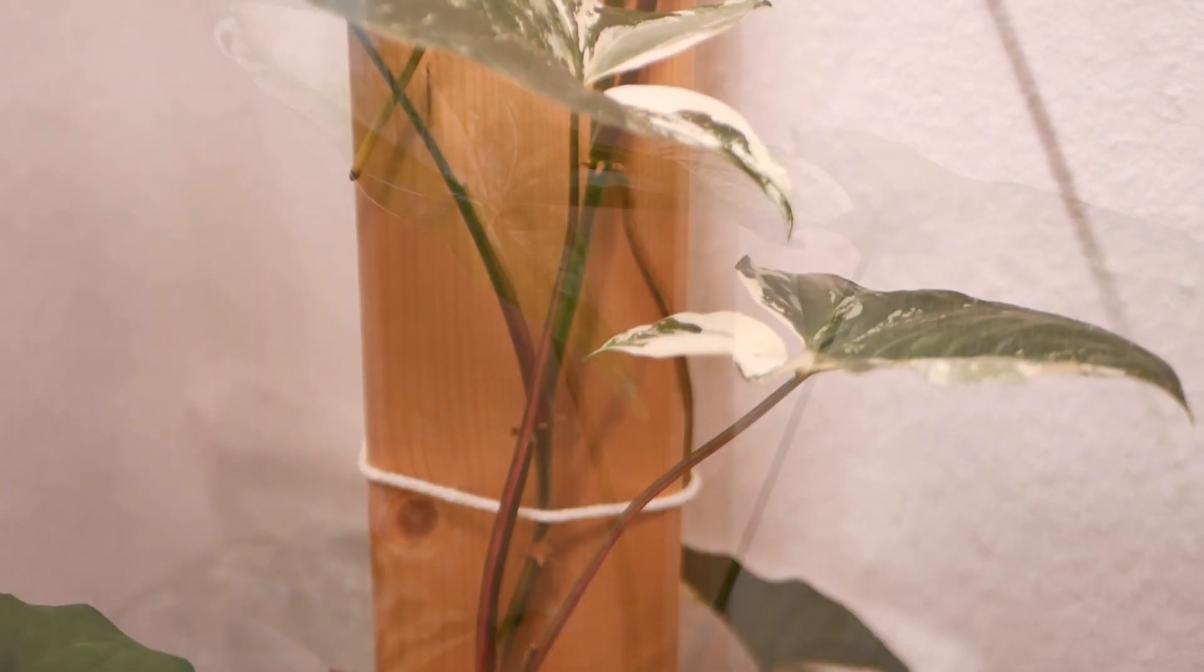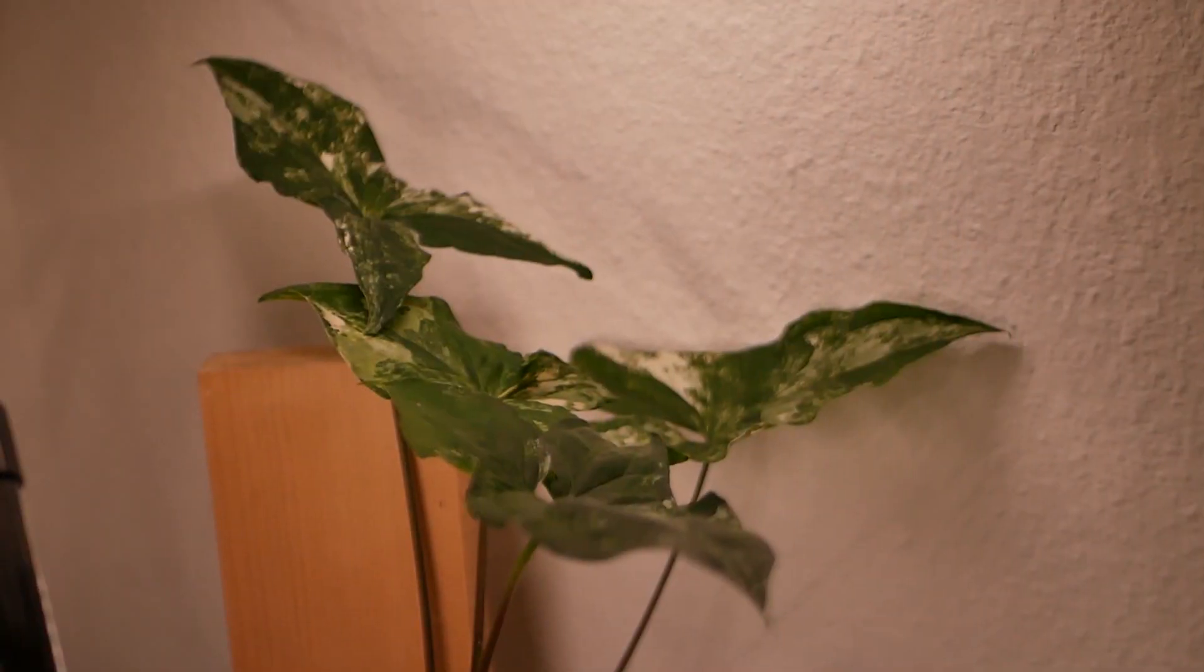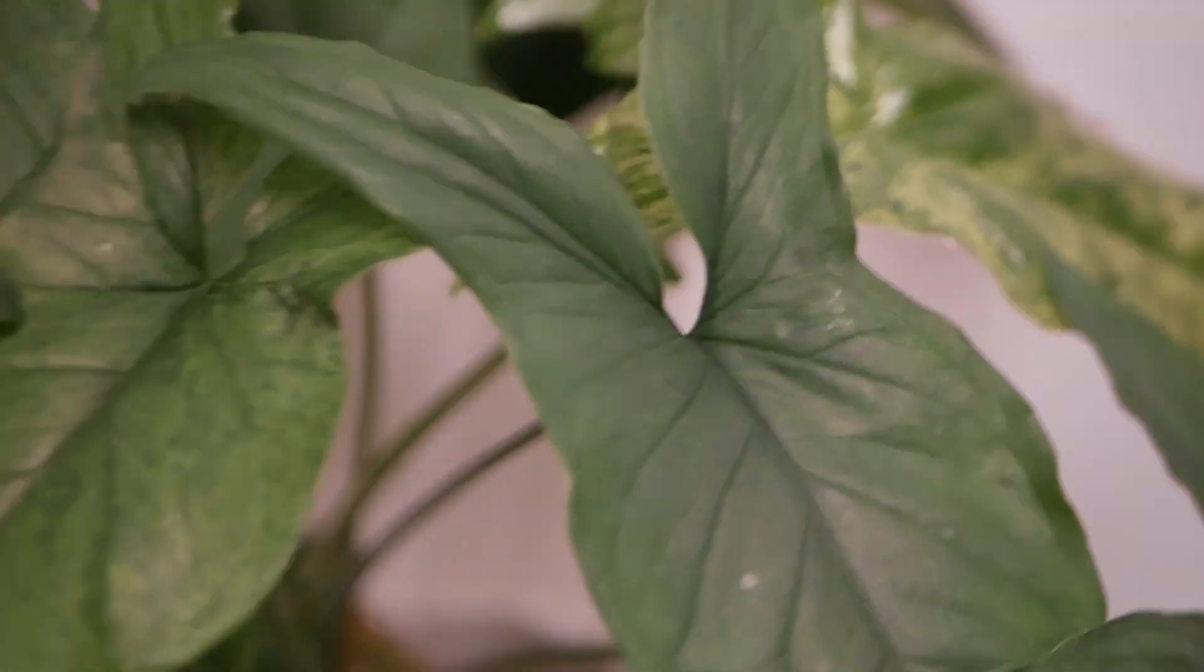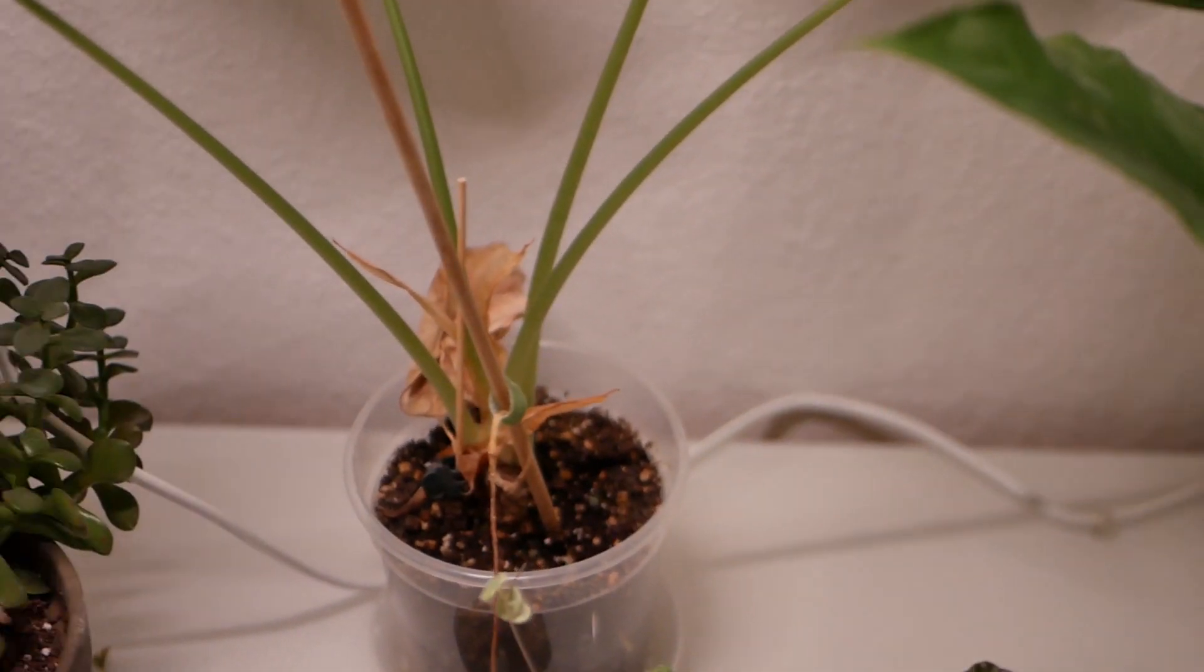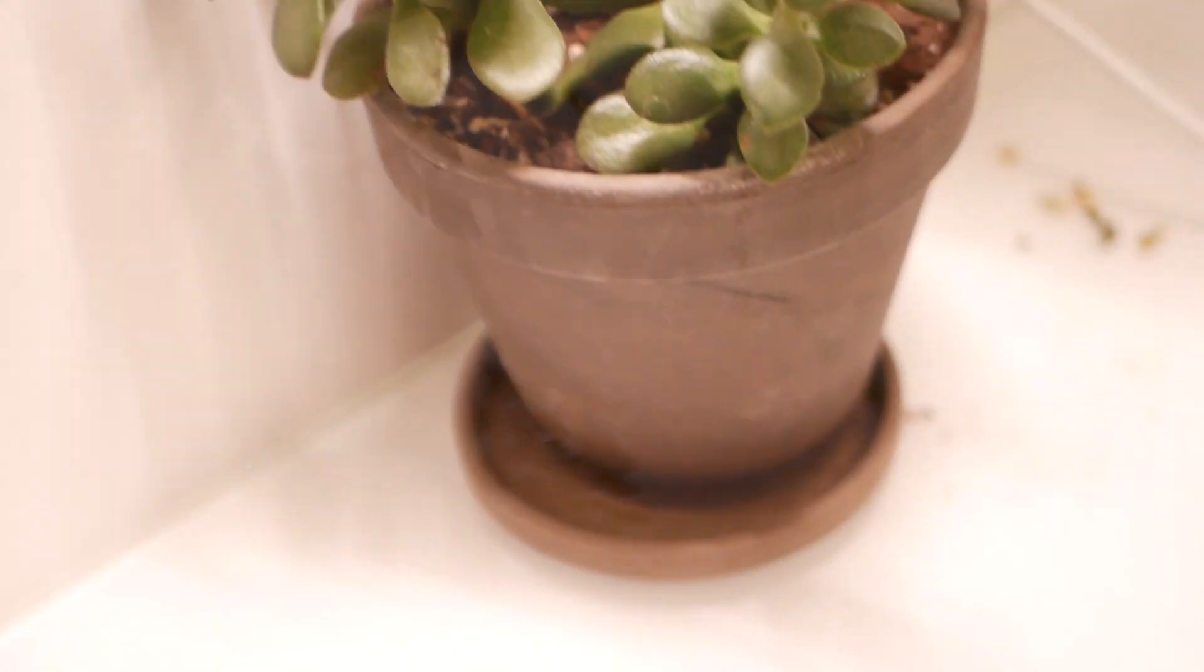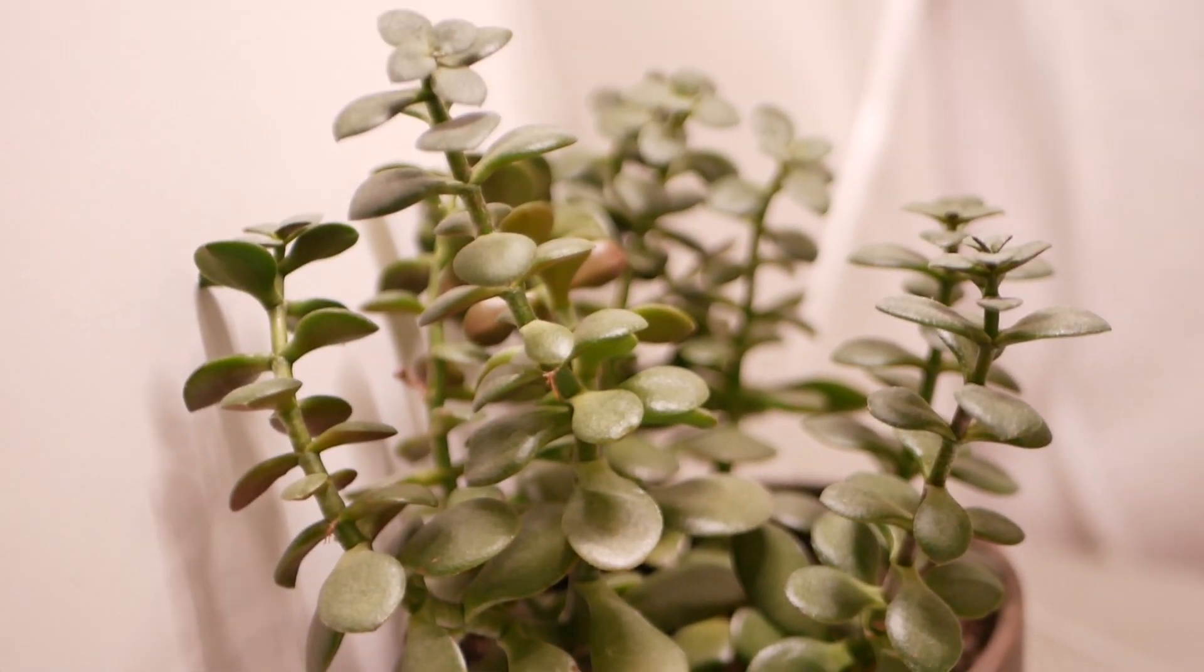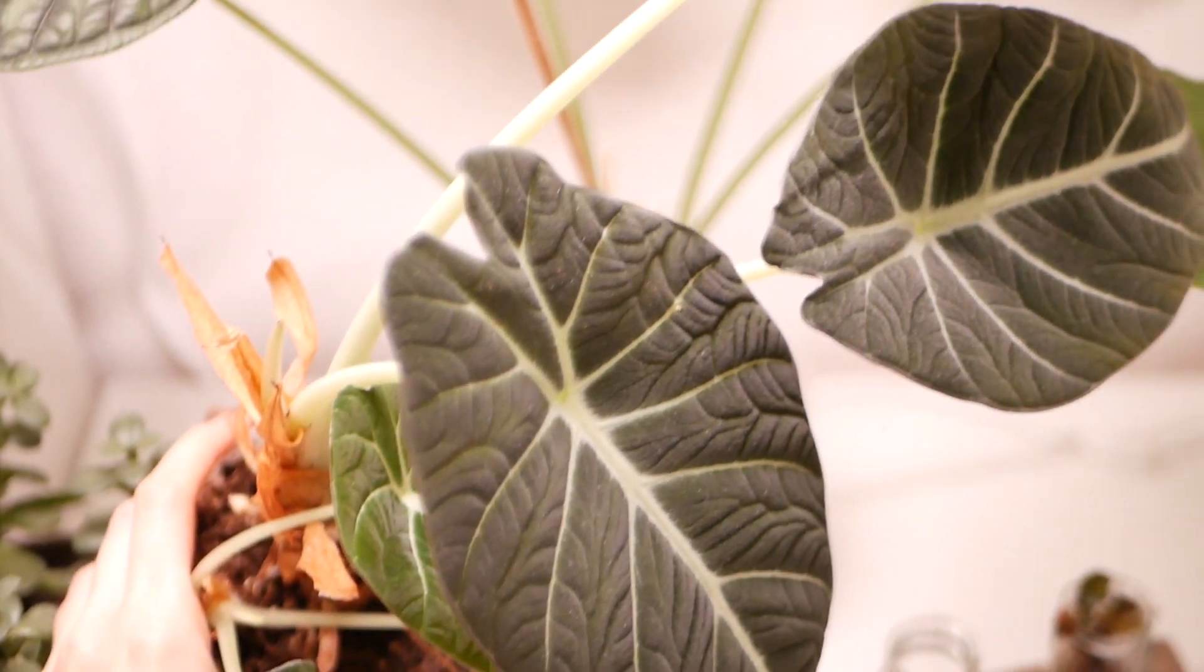The last room will be my bedroom with my syngonium elbow on the wood plank. Right next to it there is the syngonium mottled. There you can see my alocasia dragon scale and here is my jade plant, the alocasia black velvet.